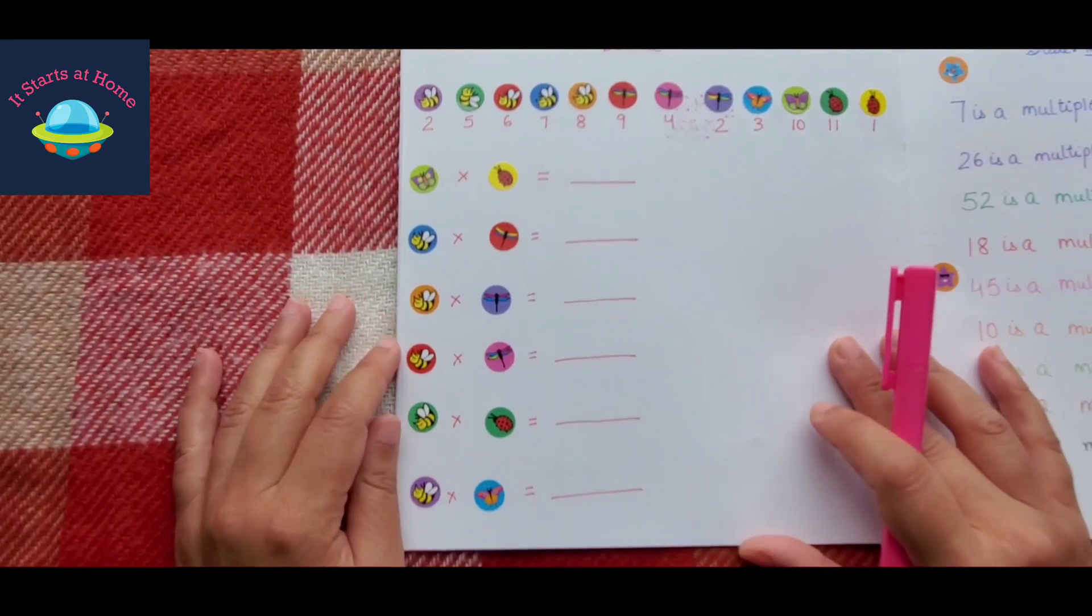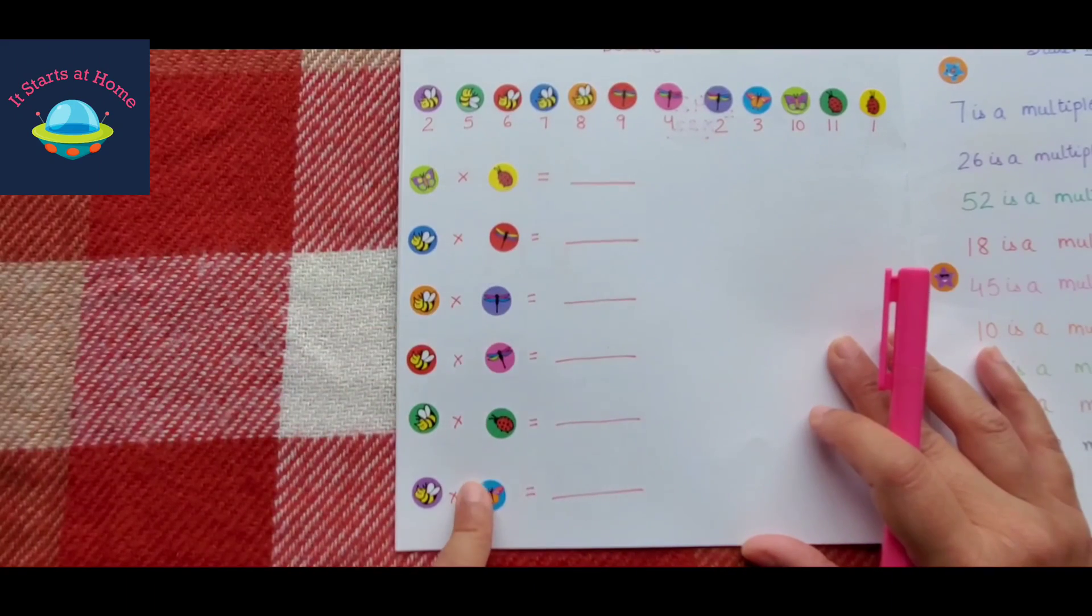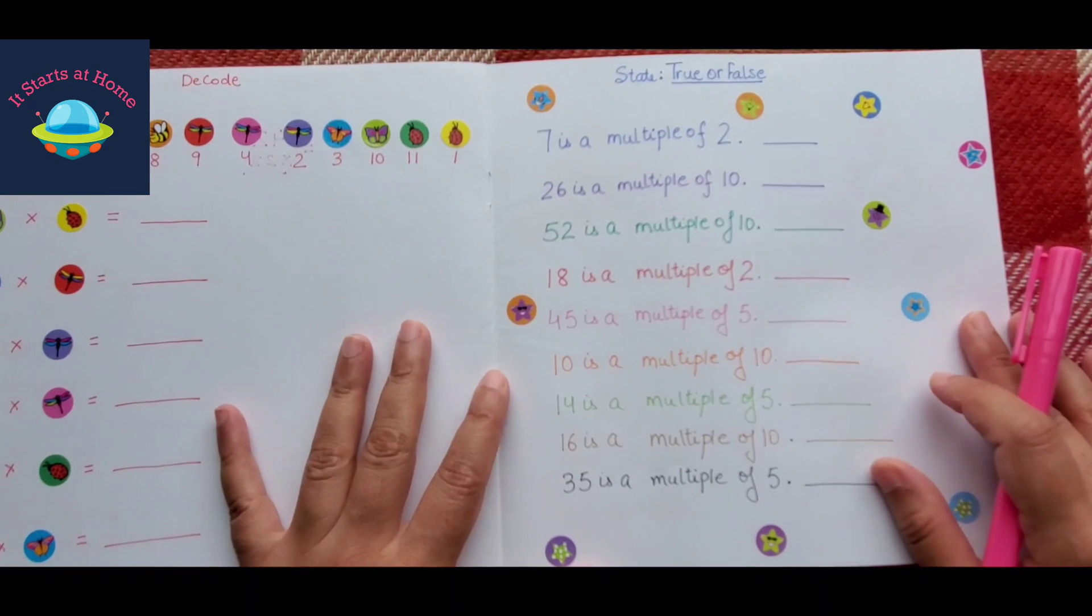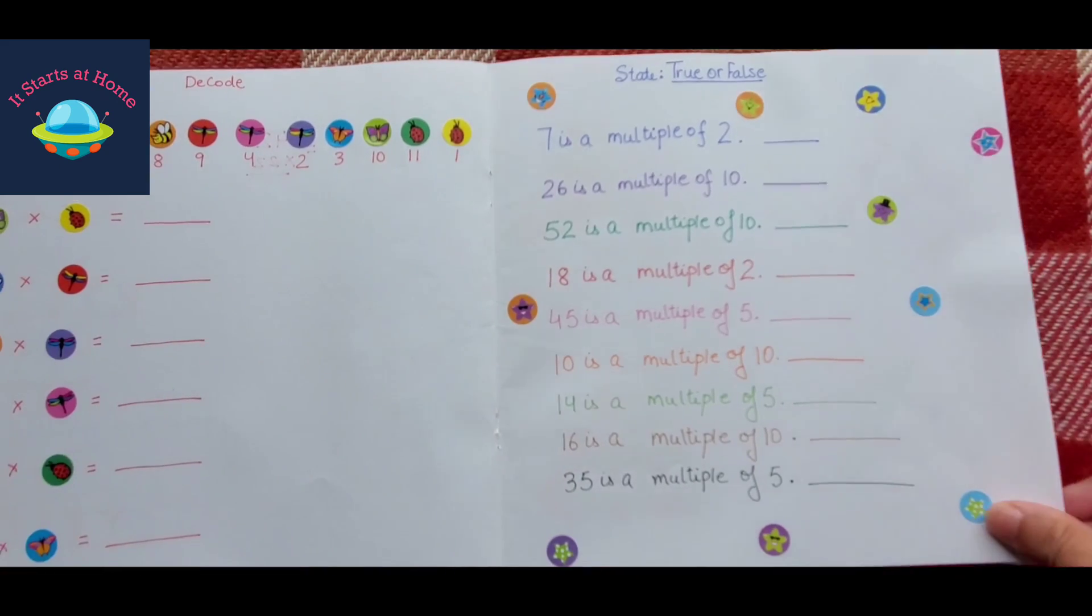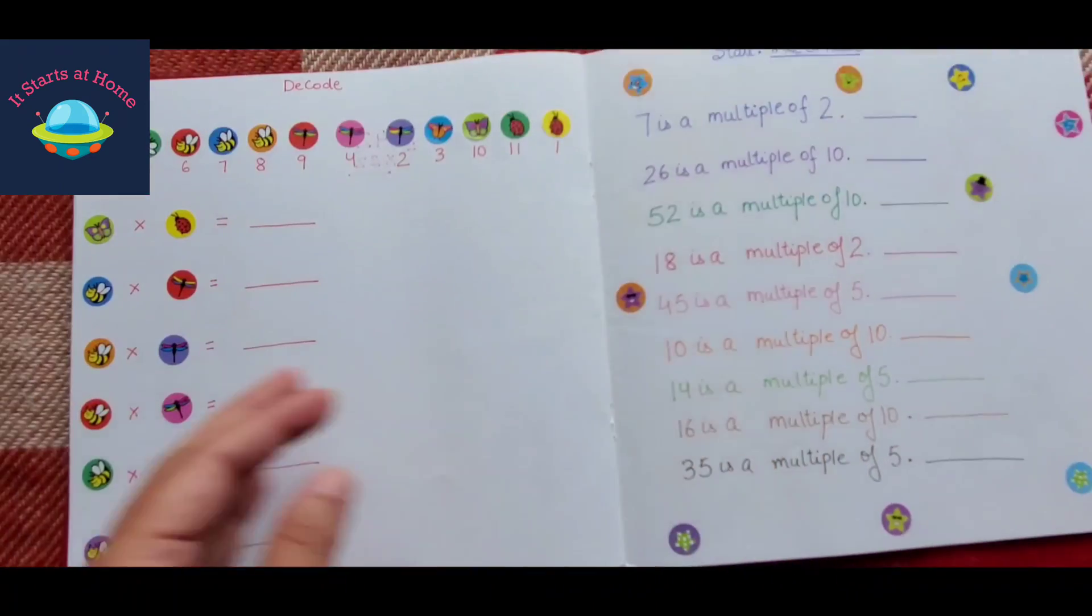Then you have a decoding activity right here which is a multiplication activity, and the child needs to pick up the number from here and find the multiplication answer. Then you have true or false: 7 is a multiple of 2, 26 is a multiple of 10, 52 is a multiple of 10. So you have a couple of options right here.